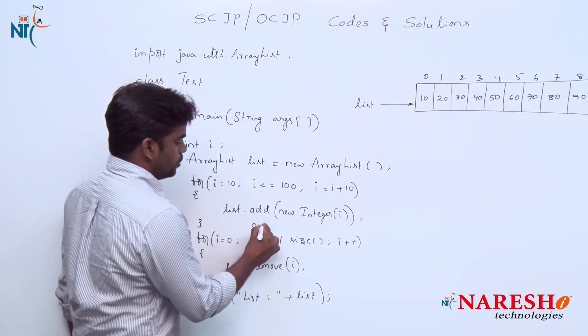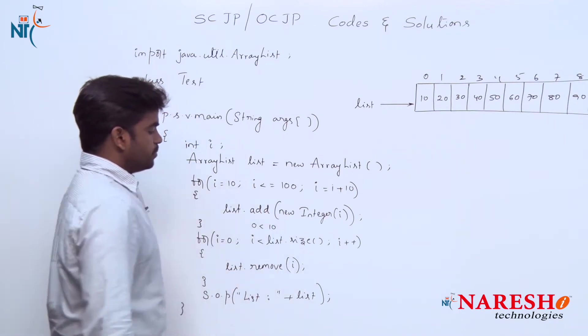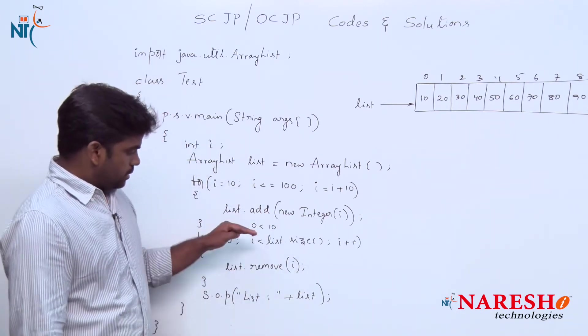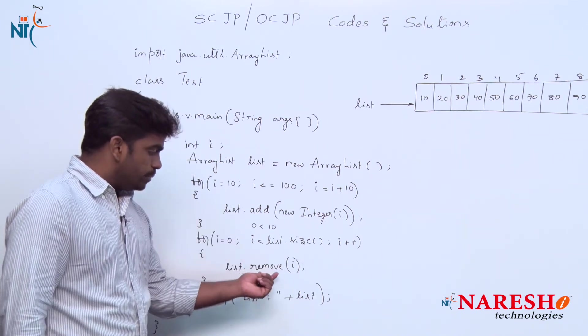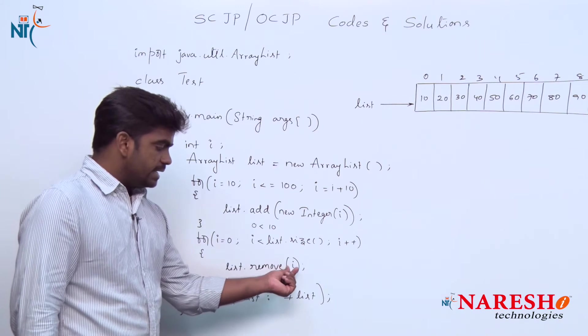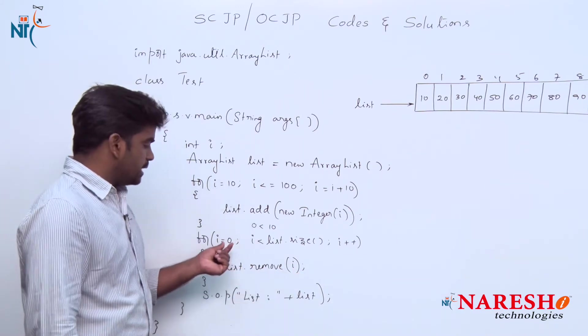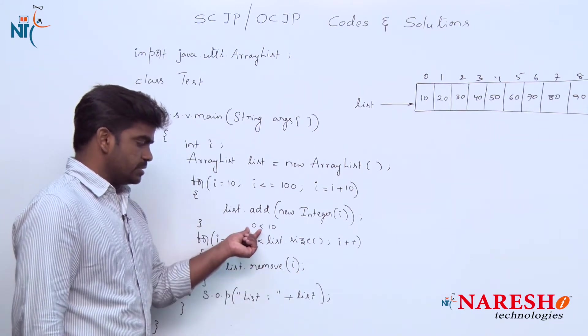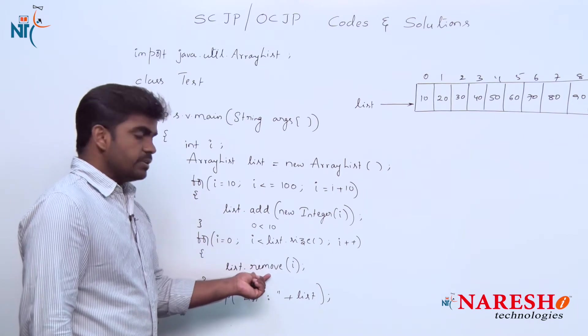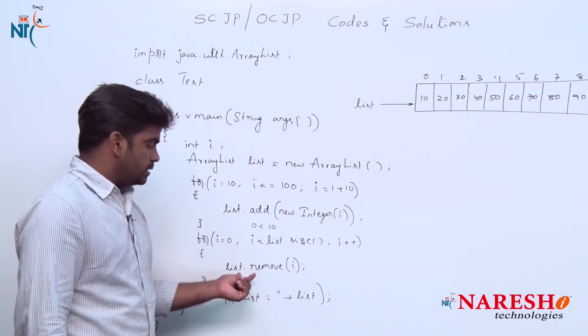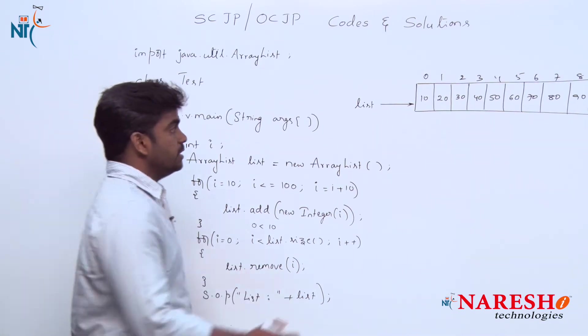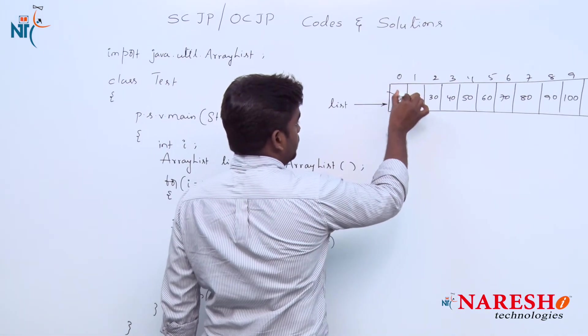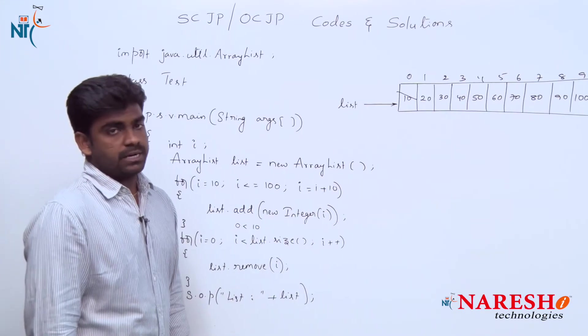0 is less than 10, condition is true, come inside. list.remove(i), here we are using the remove method which is taking index as an argument. The index value is 0 first. Whatever element is present in the list at 0th location will be removed first. The 10 will be removed.